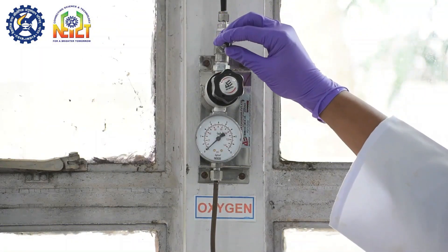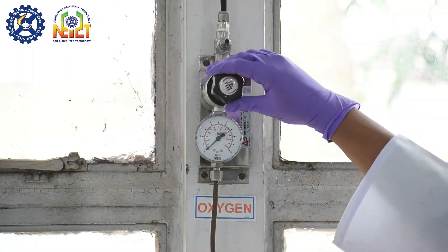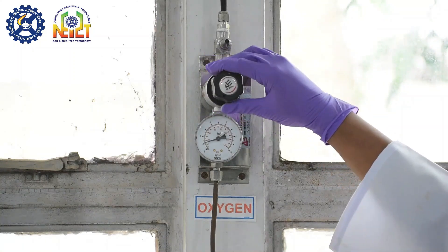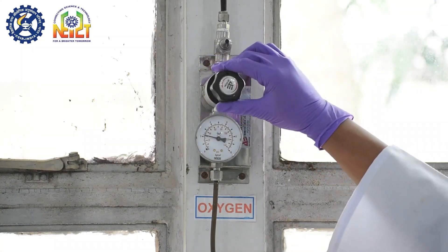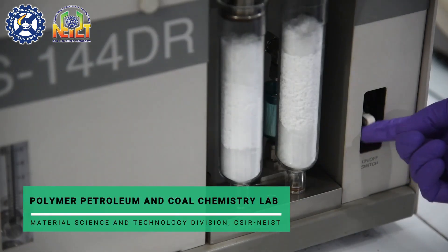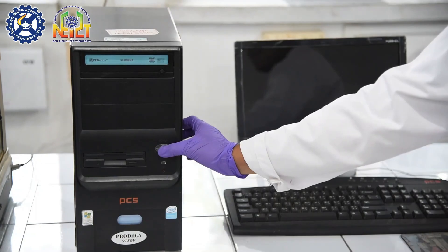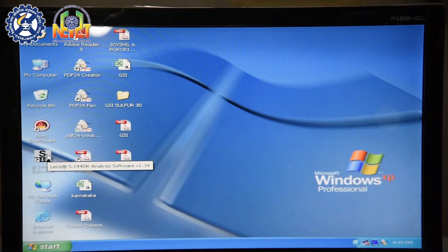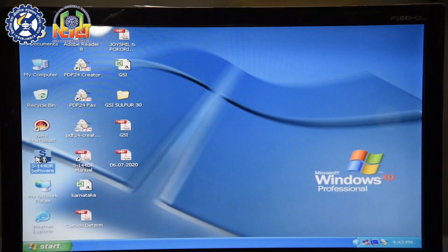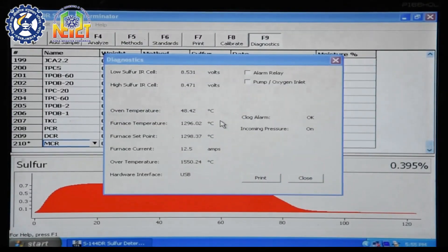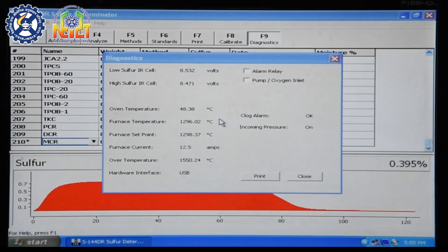Turn on the oxygen gas supply to 40 psi. Turn on the instrument and the computer system connected to it. On the desktop screen, double click on the S144DR icon to run the software. It may take some time to open the program.